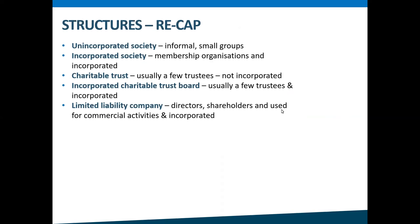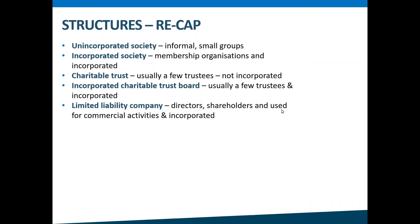We've discussed the main forms a charity can take. We started with unincorporated societies, which are most suitable for informal, smaller groups that might not want to apply for very much funding. We then discussed incorporated societies, which are membership organisations incorporated and listed on the incorporated societies register. We looked at charitable trusts, which often have fewer trustees and are not incorporated. Then we talked about incorporated charitable trust boards, which are incorporated and listed on the charitable trust register. And last up was limited liability companies, which have directors and shareholders and are used mainly for more commercial activities to raise funds for charitable purposes — they're also incorporated and listed on the companies register.